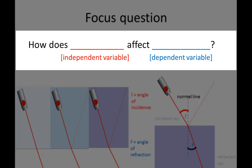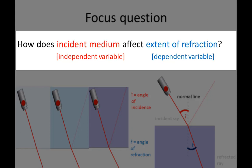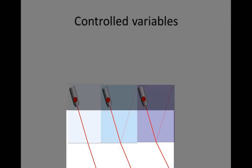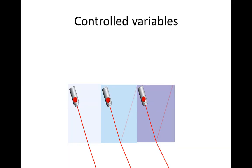What is our focus question? How does the incident medium affect the extent of refraction? In this investigation we are going to change the incident medium that the light shines through and see how that affects the extent of refraction.